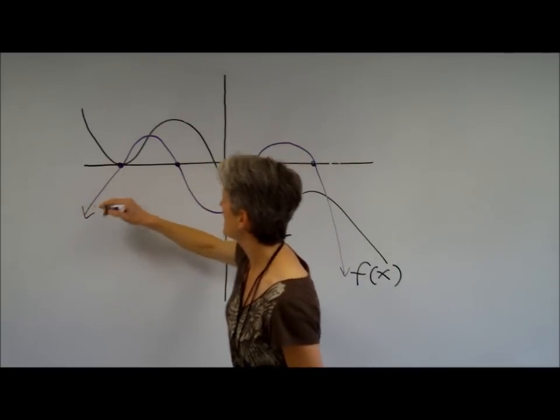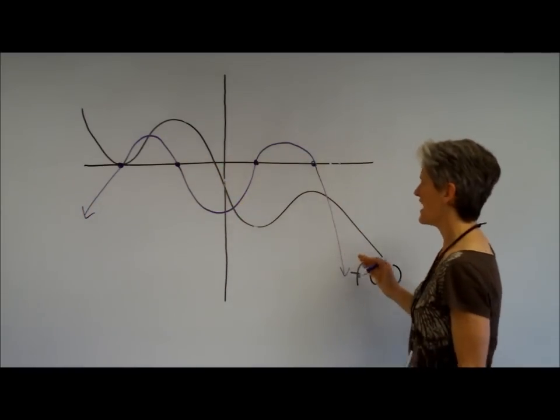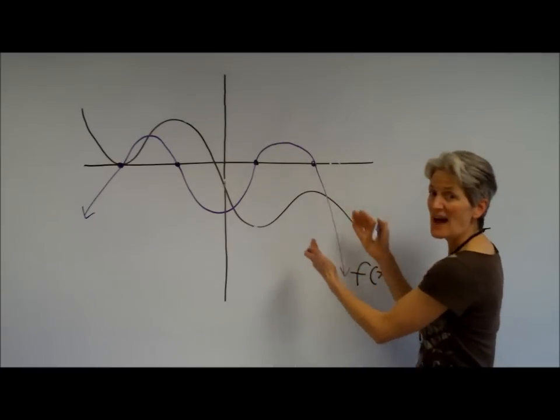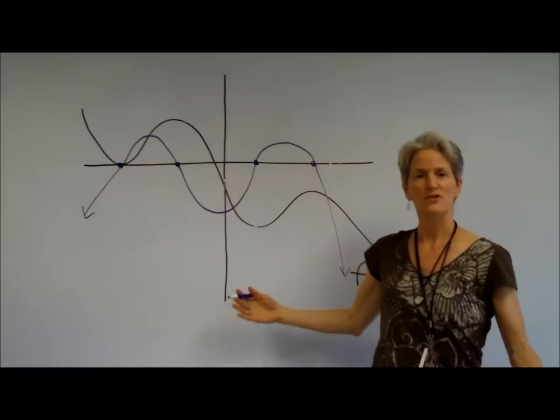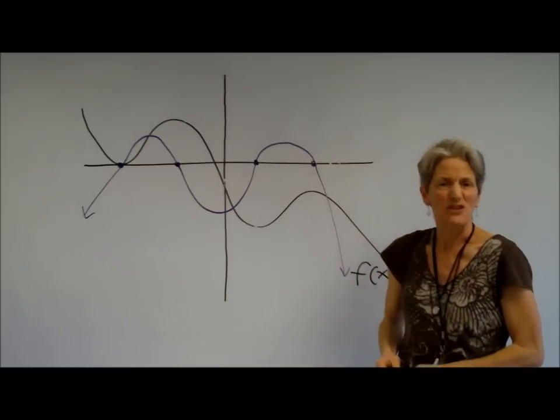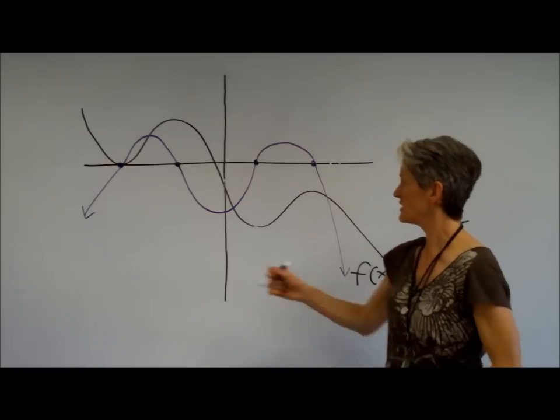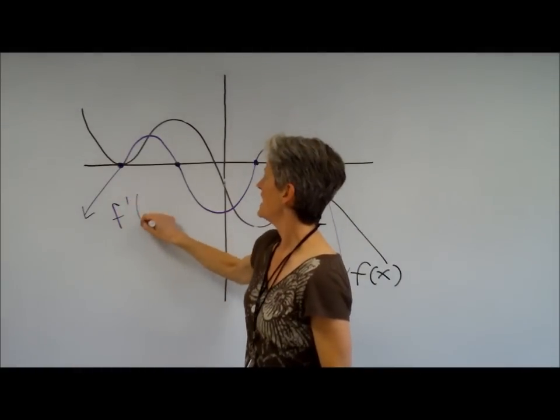Now I don't know exactly what the derivative looks like. I don't know exactly how it's interacting with the original function. We're just doing a loose sketch of what I think the derivative is going to look like. And let's call it f prime of x.